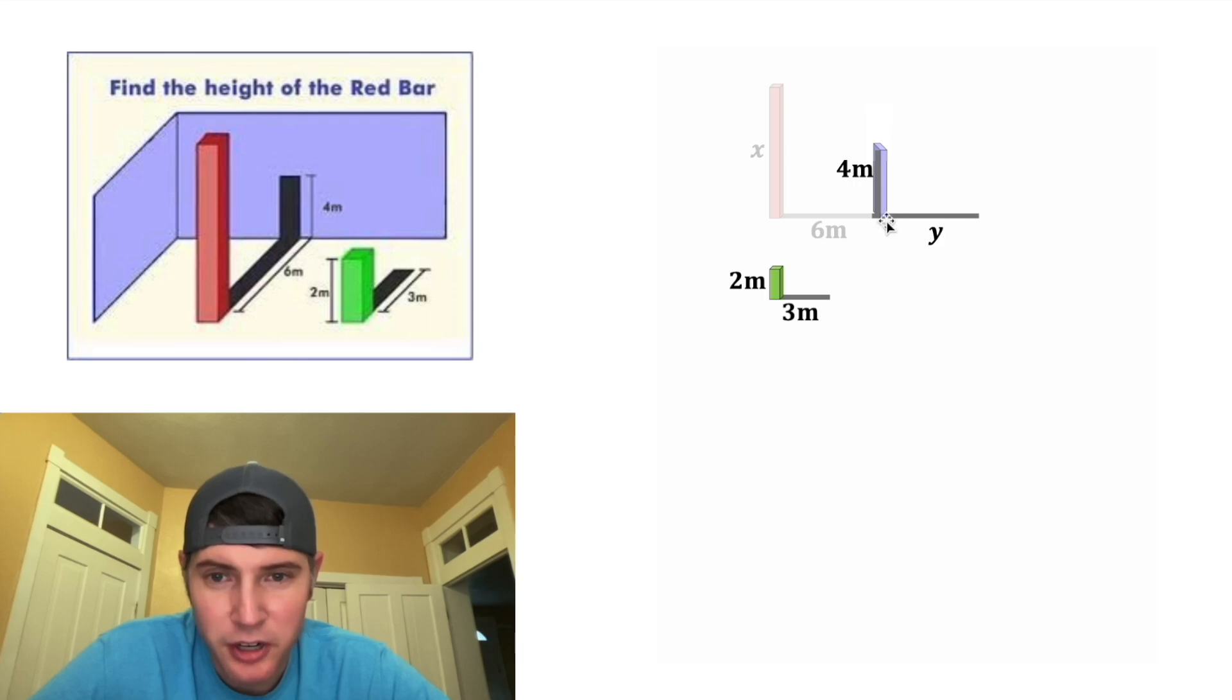Let's focus on this part and this part right here. We can set up a proportion. We can say that two over three is equal to four over Y because the shadows are proportional to the heights of the objects.